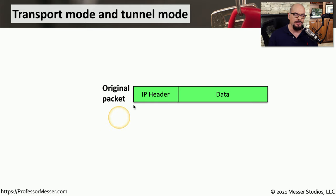If you want to protect both the IP information and the data, you'll want to use tunnel mode. In tunnel mode, both the IP header and the data are encrypted with IPSec. We put IPSec headers and trailers around those, and then we add a brand new IP header that sends this information to the IPSec concentrator on the other side of the tunnel.